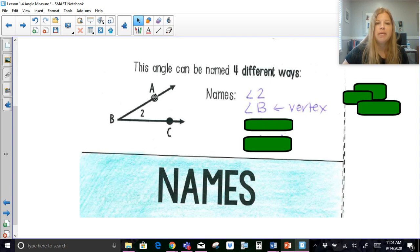Or I can call it by the three points that I see that make up these rays. So I've got ray BA and ray BC. But when I name an angle, I need to name it so it's an endpoint on a ray, or excuse me, a point on a ray, the vertex, and then another point on the other ray. So I can name this angle A, B, C.